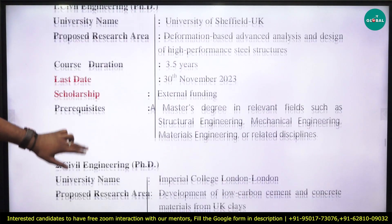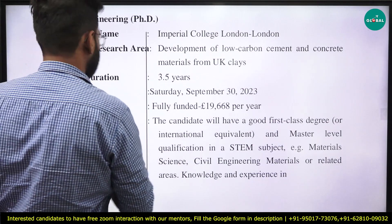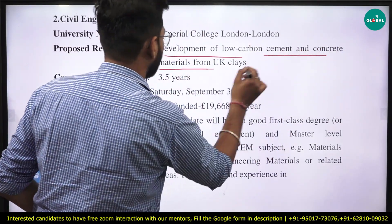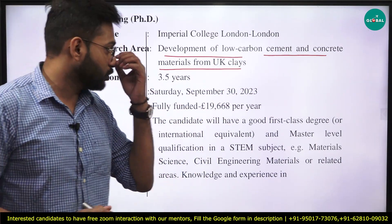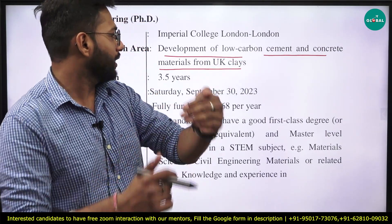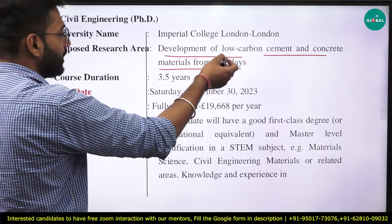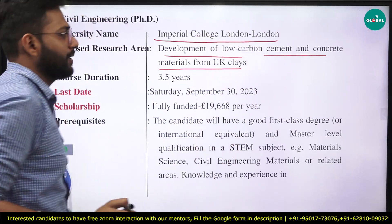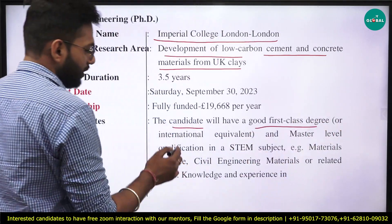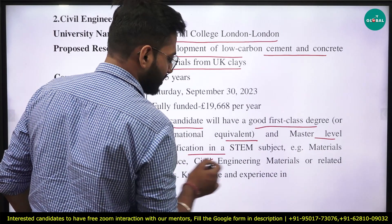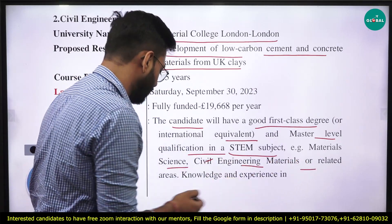The next university is Imperial College London. The proposed research area or project is the development of low carbon cement and concrete materials from UK clays. If you have interest in this area, you can visit the website for more details. The prerequisites for this course are that the candidate must have a good first-class degree or international equivalent, and a master's-level qualification in STEM subjects such as materials science, civil engineering, or related areas.